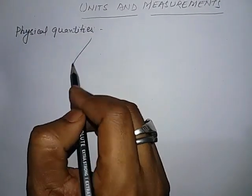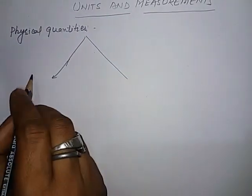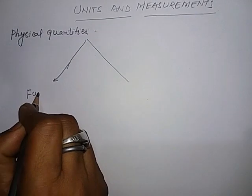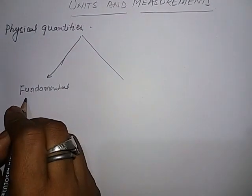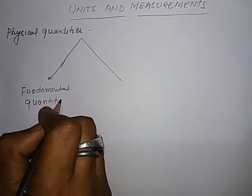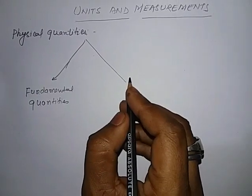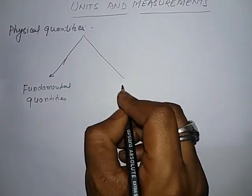There are two types of physical quantities. One is fundamental quantities, and the second one is derived quantities.